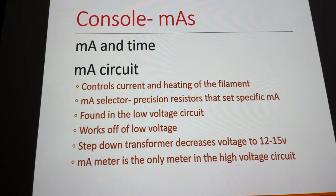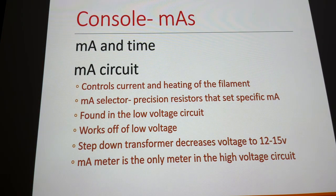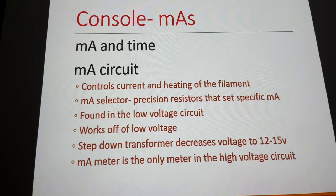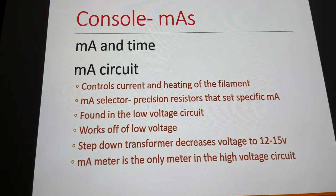There are two things found in the high-voltage circuit rather than the low-voltage circuit: the X-ray tube itself, obviously, and rectifiers. Rectifiers must be in the high-voltage circuit because all transformers work off alternating current — if you put rectifiers before the high-voltage transformer, you lose high voltage. But you don't control rectifiers; they're static, doing their job, posing no danger to you.